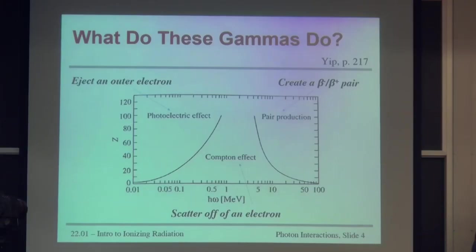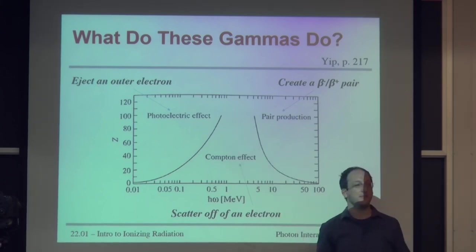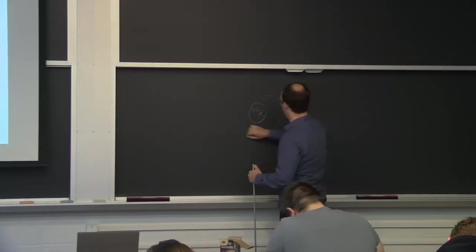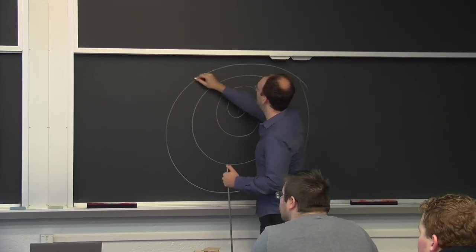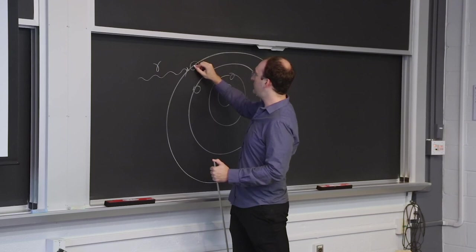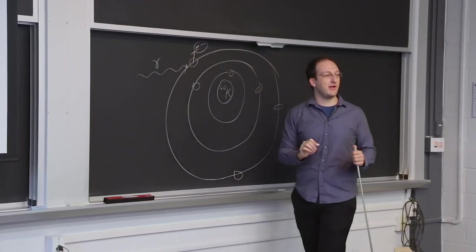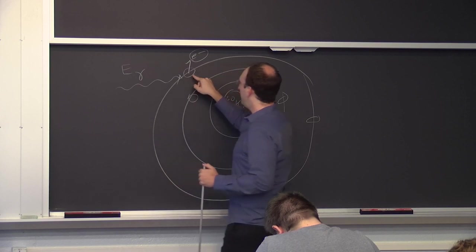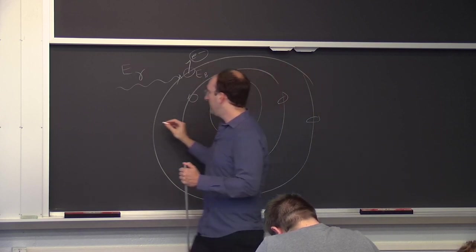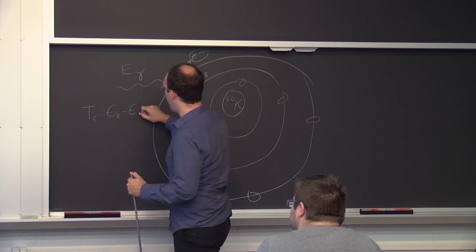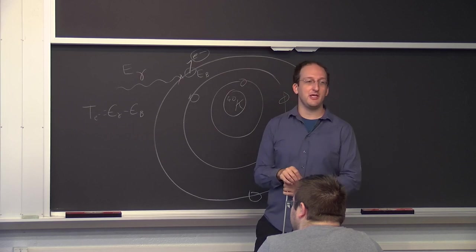There are three main things that gamma rays will do in matter depending on their energy and the matter itself. First, the photoelectric effect, where a gamma ray simply ejects an electron. For a potassium-40 atom with a bunch of electron shells, the gamma ray ejects that electron. The energy balance: this gamma has energy E-gamma, the electron has binding energy E-binding, and the kinetic energy T of the electron is simply E-gamma minus E-binding.